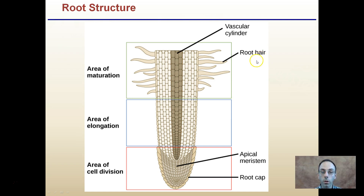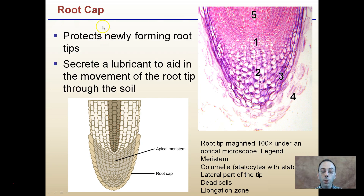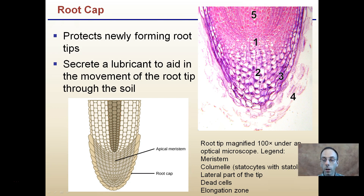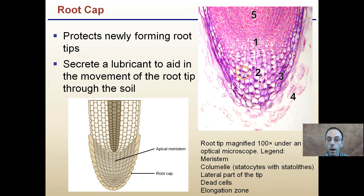Let's look more deeply at root structure, focusing on three regions: area of cell division, elongation, and maturation. At the very tip we have the root cap, which protects the newly forming root tips and secretes a lubricant to aid movement through the soil. These root tips are actively growing - this is one of those apical meristems - and the root cap protects the recently dividing cells as it pushes through the soil.